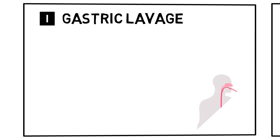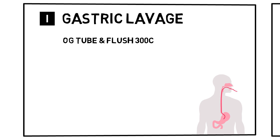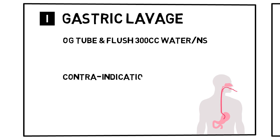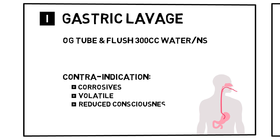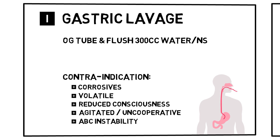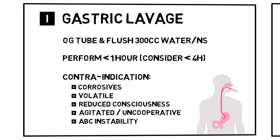Gastric lavage used to be routinely used, but nowadays usage is more reserved. It is performed by inserting a gastric tube, placing the patient onto their left side with the pylorus pointing up, and flushing the tube with 300cc of water or normal saline. It is contraindicated if the patient has ingested corrosive materials like acids, or volatile substances like petroleum, as this increases the risk of aspiration. Patient-specific contraindications include a decreased level of consciousness, agitation, or ABC instability. Gastric lavage is only effective when performed early — there is an indication within 1 hour of ingestion, and it can be considered within 4 hours depending on the drug.